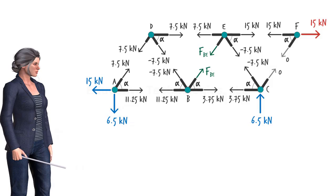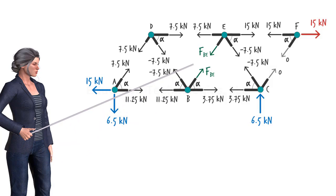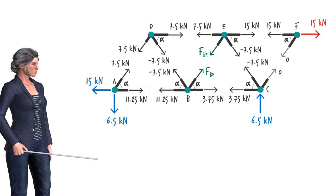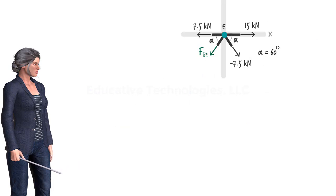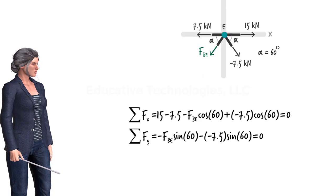At this point, only one unknown force remains, FBE. We can either use joint B or E to determine the force. Let's use joint E. Here are the two equilibrium equations, although we only need one of them to determine the unknown force.